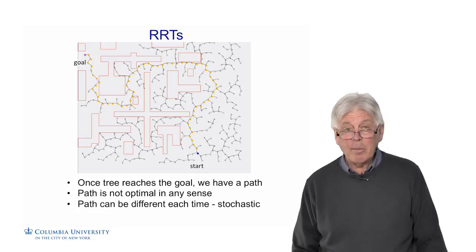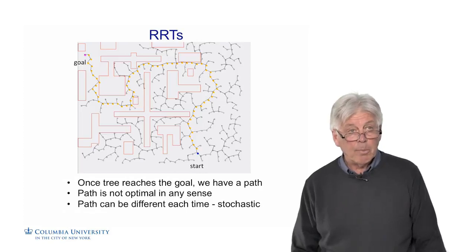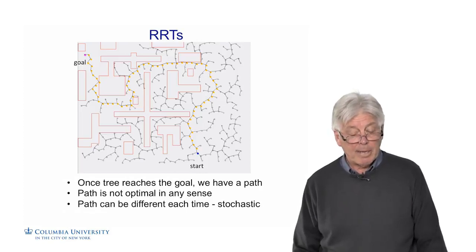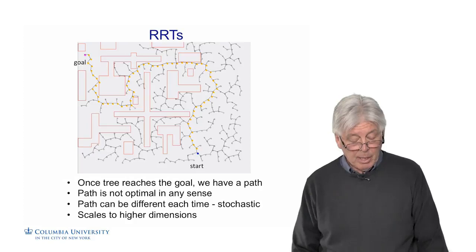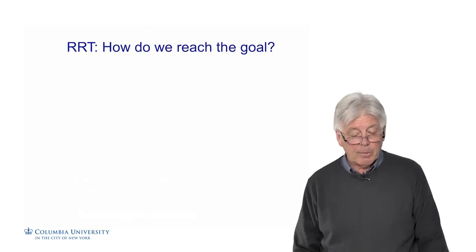It's stochastic. So the path can be different each time between two nodes. If you say go from A to B, you'll get one path, another time you may get a different path. And it scales to higher dimensions.